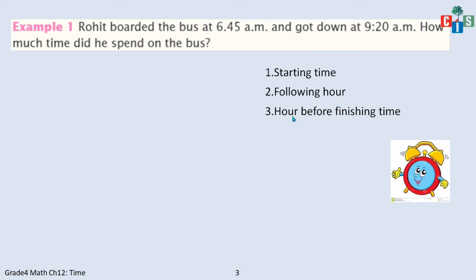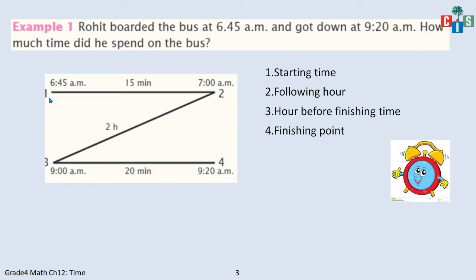Then we find the exact hour before the finishing time. The finishing time is 9:20, so the hour before the finishing time is 9 AM. So this is the trick we are going to follow — we have four different times: the starting time, the following hour, the hour before the finishing time, and the finishing time. The first point is 6:45 AM, the second point is 7 AM, and the time gap between them is 15 minutes.